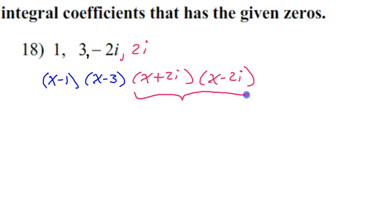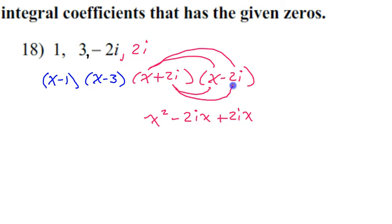I'm going to start by multiplying these two. If I double distribute, x times x is x squared. x times negative 2i is negative 2i x. Now if I double distribute here, 2i times x is positive 2i x. And 2i times negative 2i is negative 4i squared. Because i times i is i squared. The negative 2i x and positive 2i x will cancel each other out.